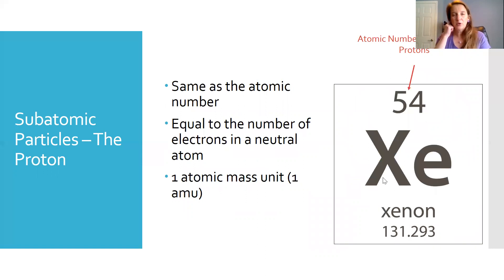The number of protons is going to be the same as the atomic number. So when you look at this symbol of xenon, for example, the atomic number, which we'll talk about later, it's found over the symbols on the periodic table. That will always tell you how many protons are in that particular element.